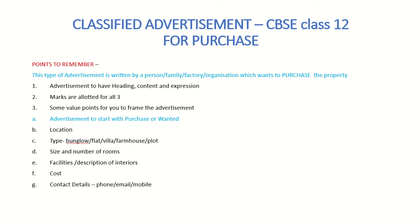Now let's look at the advertisement for purchase. This type is written by a person, family, factory, or organization that wants to purchase property. The three marking criteria — heading, content, and expression — remain the same. The key value point change is that the advertisement must start with the word 'Purchase' or 'Wanted.' All other value points from location to contact details remain the same as in the for-sale advertisement.